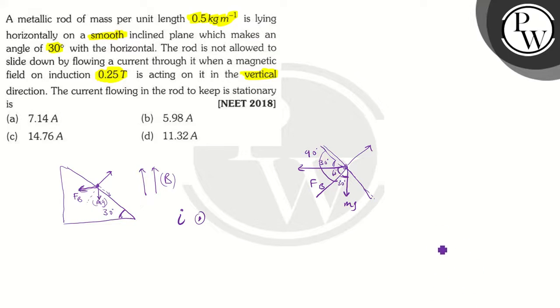We can take the component of force due to the magnetic field and the gravitational force along this line, the inclined plane. So, we will get Fb cos 30 is going to be equal to Mg sin 30.